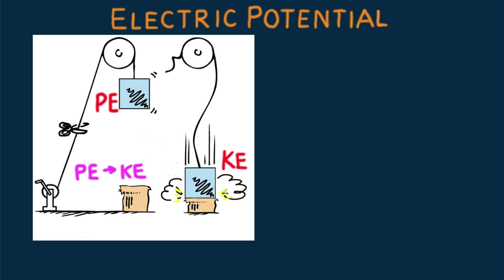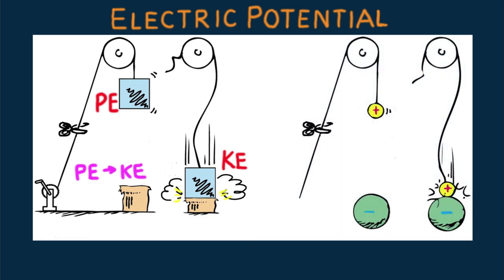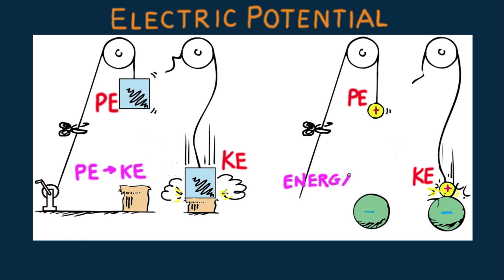So it is with an electrically charged particle positioned in an electric field. When the particle is released in the electric field — snap — a lowering of its potential energy equals a gain in kinetic energy. Again, energy is conserved in the process.